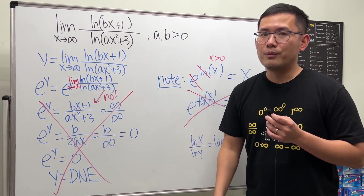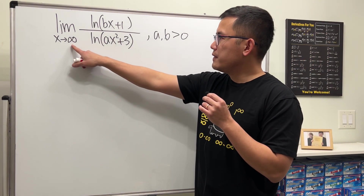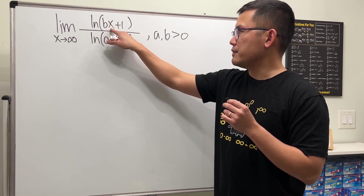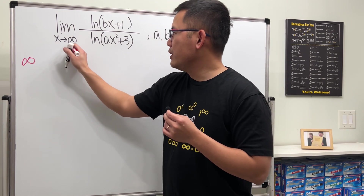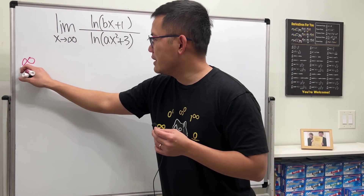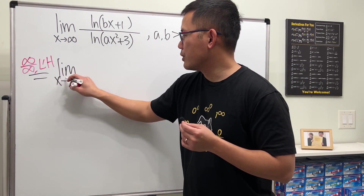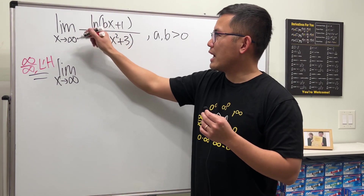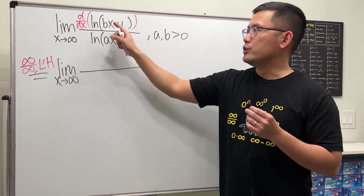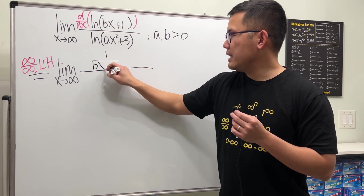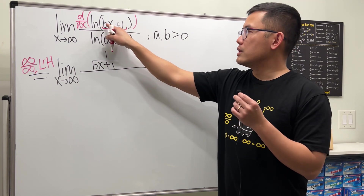Now the question is how do we take this limit? We will use L'Hôpital's rule, and the reason is: if we put infinity in, b is positive so positive times infinity is infinity, plus one is still infinity, and ln of infinity is infinity — so we have infinity on the top. On the bottom, putting infinity in also gives infinity, so we have an infinity over infinity case. This is the indicator that we get to use L'Hôpital's rule. We take the derivative of the top: derivative of ln gives one over the inside, so one over bx plus one, and by the chain rule multiply by the derivative of bx plus one, which is b.